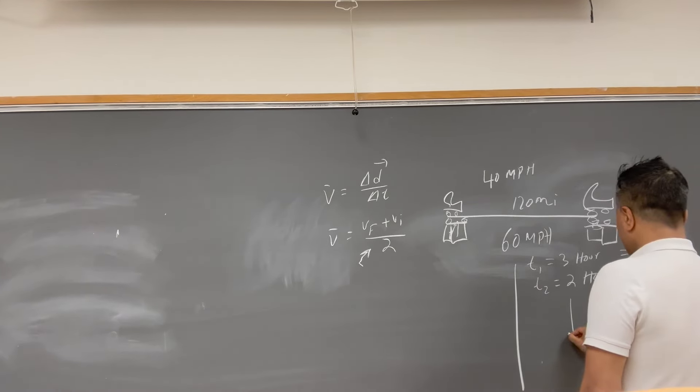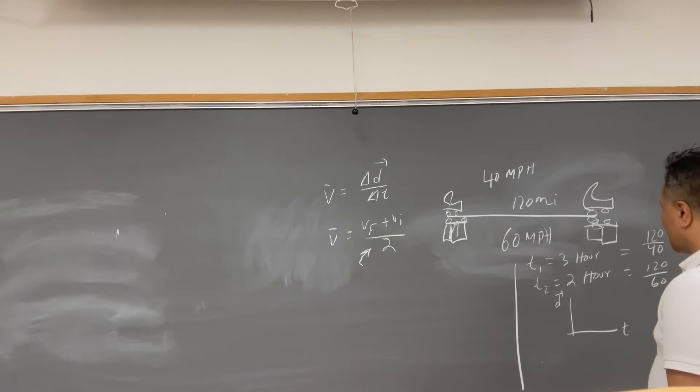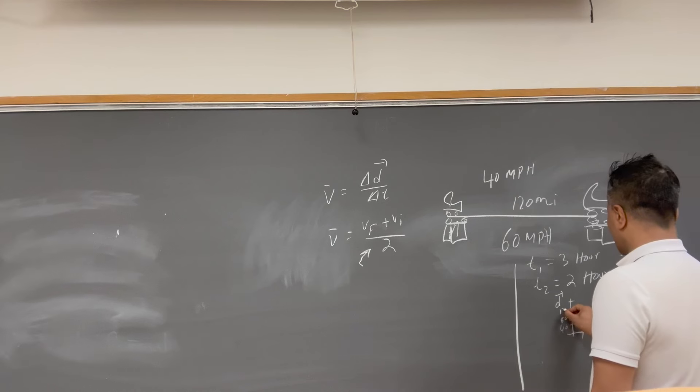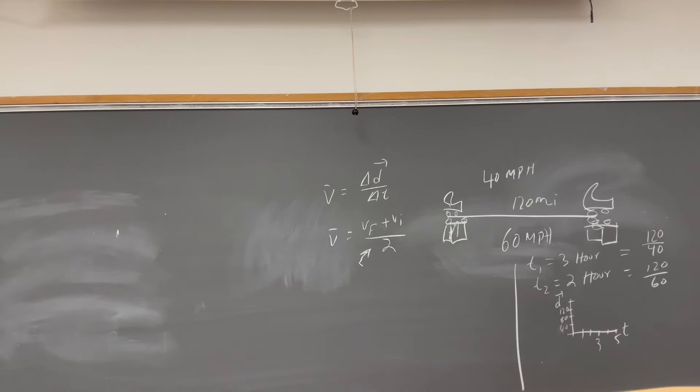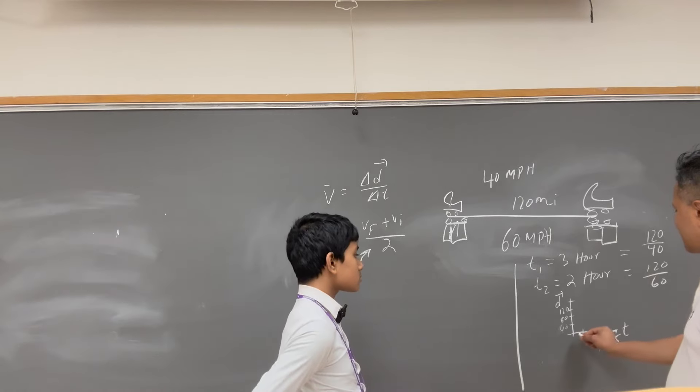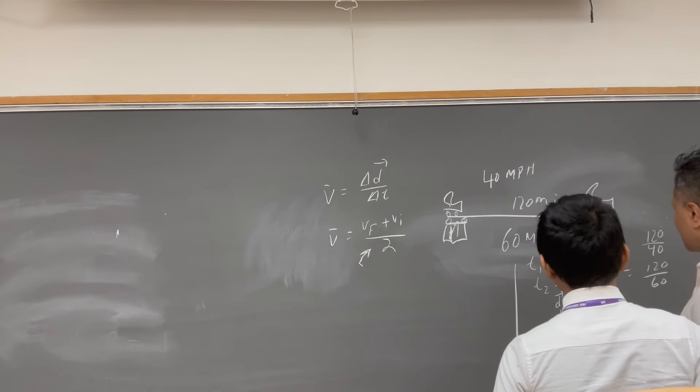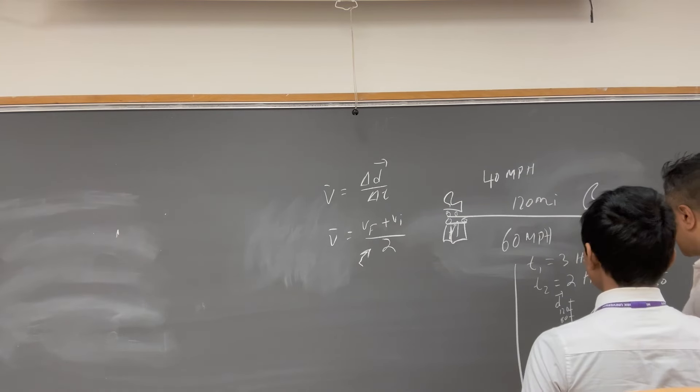So, if you do the displacement versus time graph, what do you get? This is 5. This is 3. Let's go by 40: 40, 80, 120. So, the displacement is going to be past 3 seconds, the displacement is this. And next hour displacement is this. So, this is 40T and this is negative 60T.